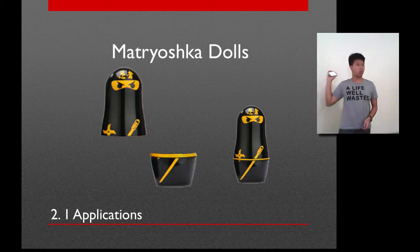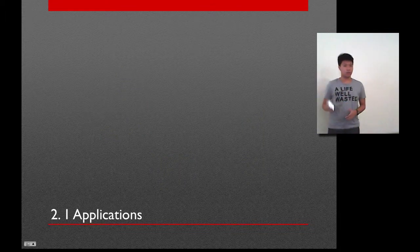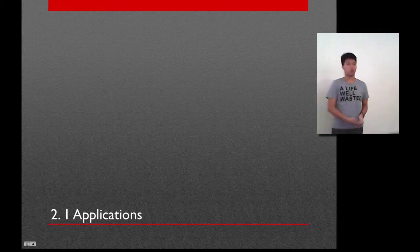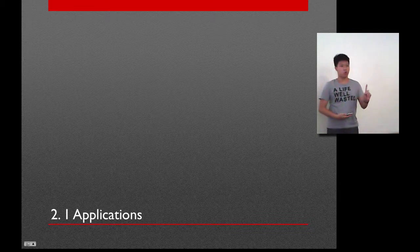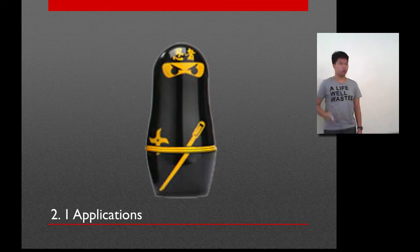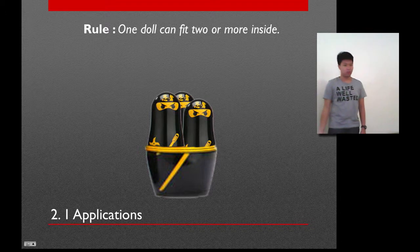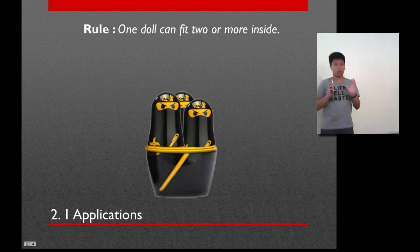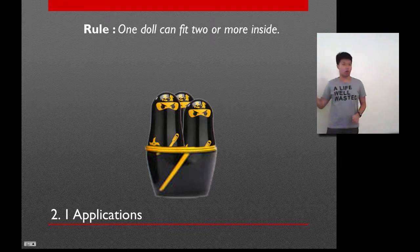Now, the Catalan numbers have been found on the Matryoshka dolls, but with one simple rule. The simple rule is, one doll could fit two, three, or four, or more inside the dolls. So, we are not looking at the size of the dolls. We are looking at that one doll could fit more.